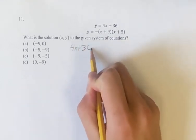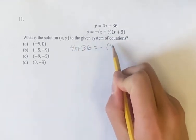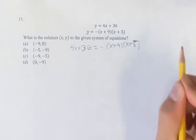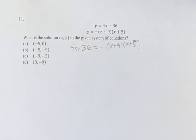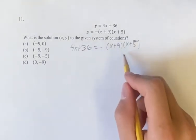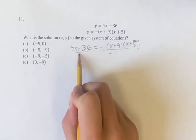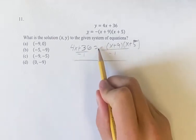4x plus 36 is equal to negative x plus 9, x plus 5. Now we have an equation with one variable and we can solve for x. So dividing both sides by negative 1 will make this a little bit easier, so we'll get rid of this coefficient.